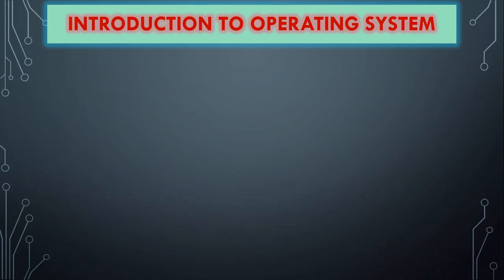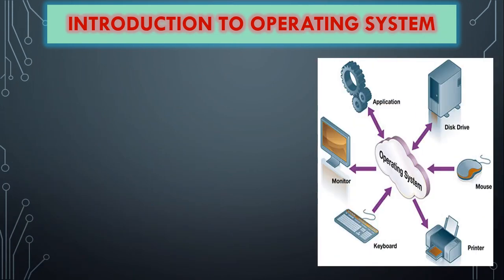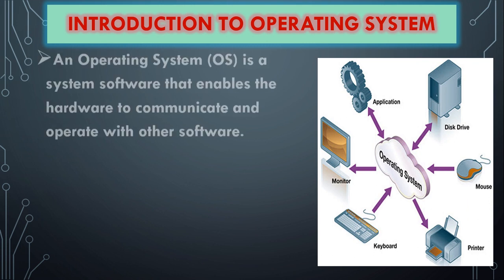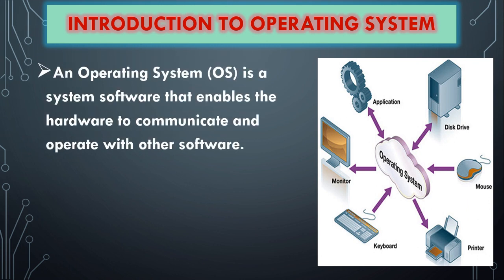Introduction to Operating System. In the previous Chapter 4 itself, we have discussed about the Operating System. What is Operating System? It is a system software which enables the hardware to communicate and operate with other software. We know that Operating System controls the overall activity of the computer. It controls each and every part of the computer to perform the task based on the instructions.